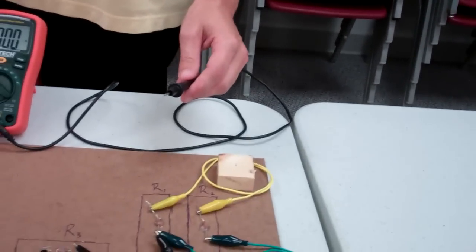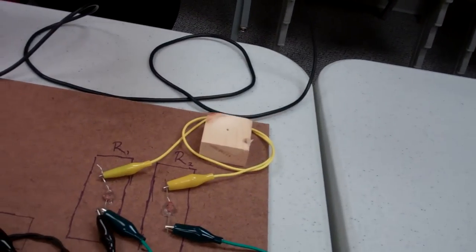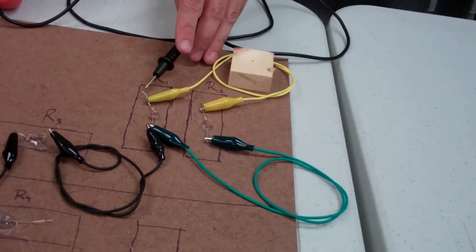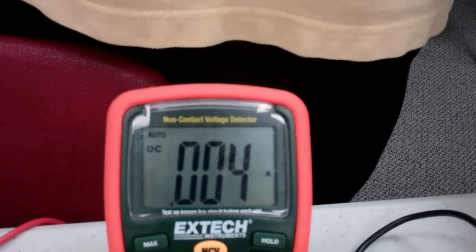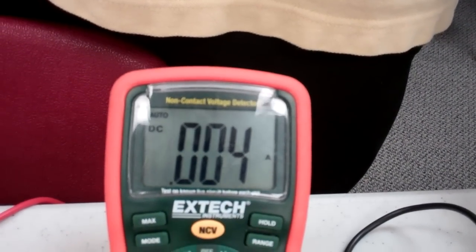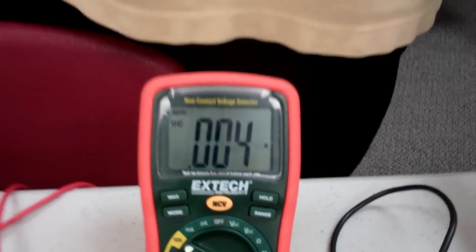Okay, now what do we do with the negative side? What we do with the negative side is we complete the circuit by posting it to the first resistor. Okay, and we are reading 0.004 amps, which is a current. Exactly.